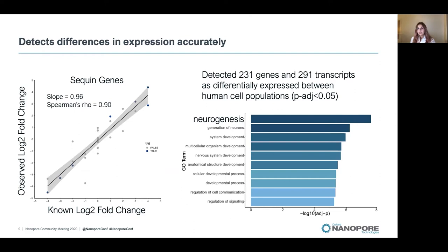The sequin control mixes contain the same transcripts at different concentrations between mix A and mix B. The concentrations are provided so that a known fold change for each gene and transcript could be calculated. On the left is a regression of the known fold changes between the sequin mixes against the observed fold changes from our direct RNA sequencing data. The fold changes are highly correlated with a slope close to one, showing that direct RNA accurately quantifies differences in expression.